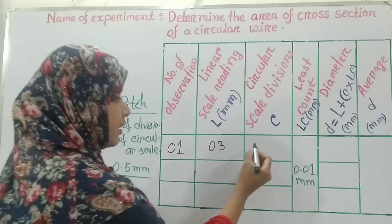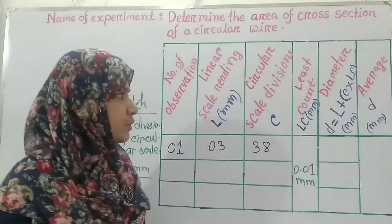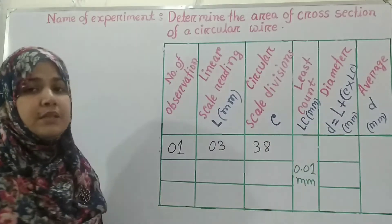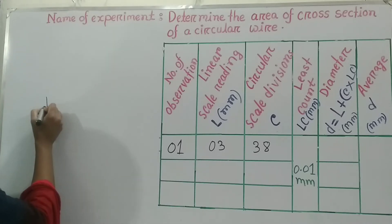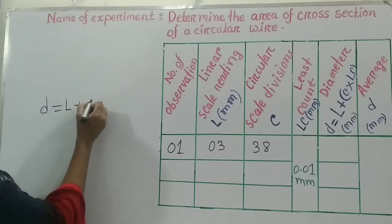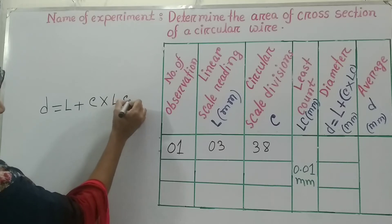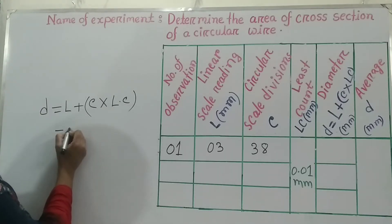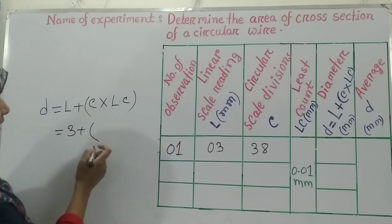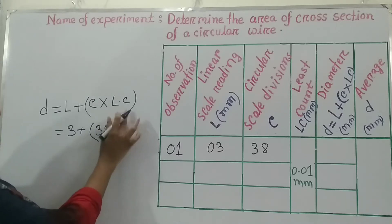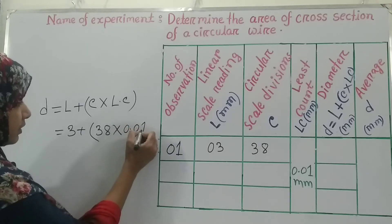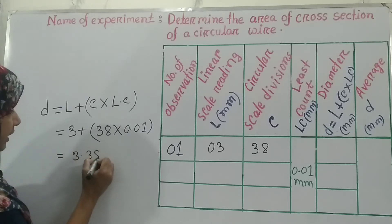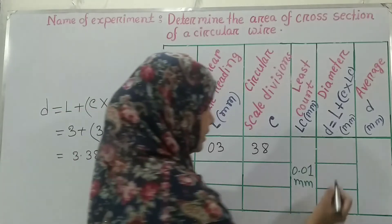Now I can easily measure the diameter with the help of this equation. To determine the diameter with the help of a screw gauge: D equals L plus C multiplied by LC. The value of linear scale reading L is 3, plus the value of C is 38, multiplied by least count 0.01. After calculating it you will get the value 3.38 millimeter. So our first reading is 3.38.